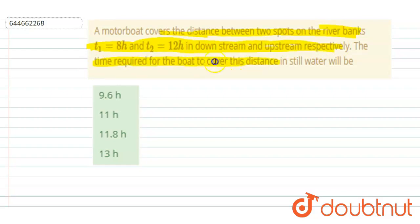The time required for the boat to cover this distance in still water. So if I make a river like this, let's say, and the river is flowing in this direction with velocity vᵣ. And it is said that between two spots, let's say the spots are P and Q, and in between them the distance is d.